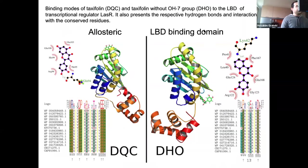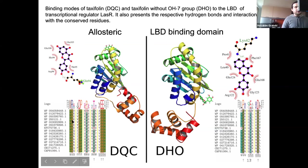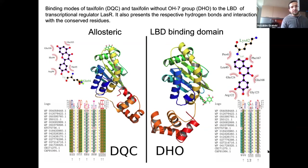Here you can see that the first binding site is the LBD — the ligand binding domain. The taxifolin molecule does not interact directly in the binding domain itself; it acts via an allosteric mechanism. However, it does interact with some important residues that are conserved across different species. Removing the OH group does affect the binding, and the molecule interacts with fewer amino acid residues.